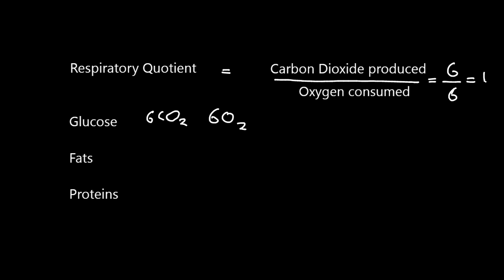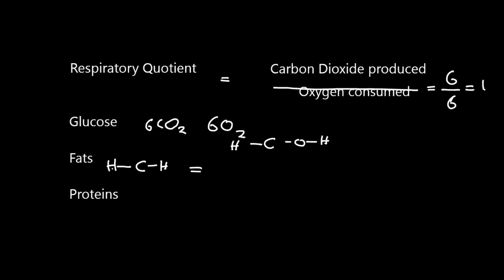Now, for a fat, fats have got more carbon-hydrogen bonds, so the fatty acids, each carbon is joined to two hydrogens, whereas for a carbohydrate, each carbon is joined to a hydrogen, joined to an oxygen, joined to a hydrogen. Therefore, there are more hydrogens to be consumed and turned into water, therefore more oxygen is used in the respiration of a fat, therefore it has a lower RQ, so it has an RQ of around 0.7. Because more oxygen is consumed for the carbon dioxide that is produced.